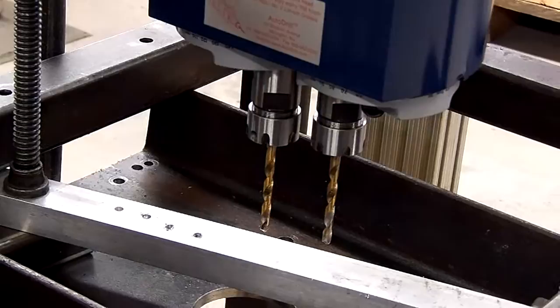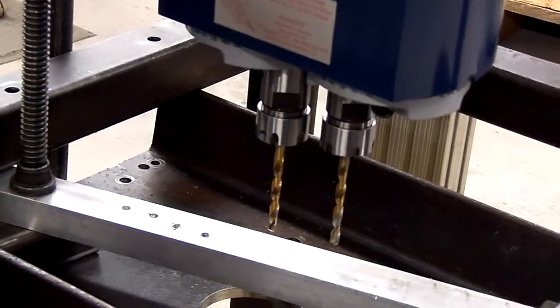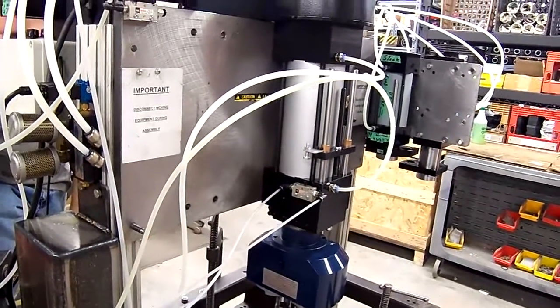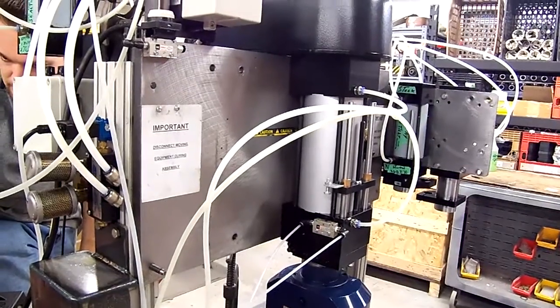Typically, a machine like this is used to increase your production time by drilling multiple holes at once. Multi-spindle heads can be made to accommodate a variety of patterns and accomplish drilling two, three, and in some cases, up to 36 holes at once.